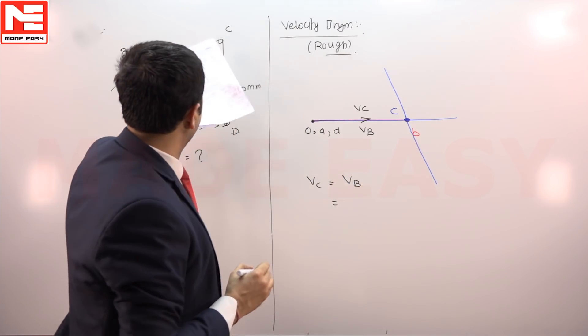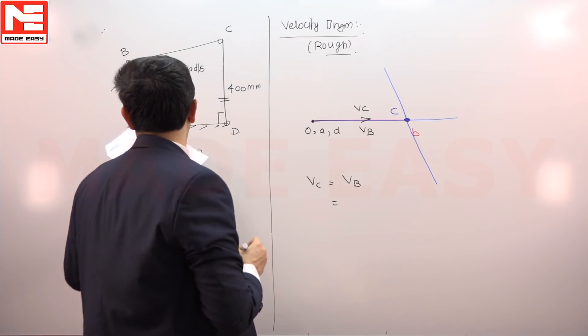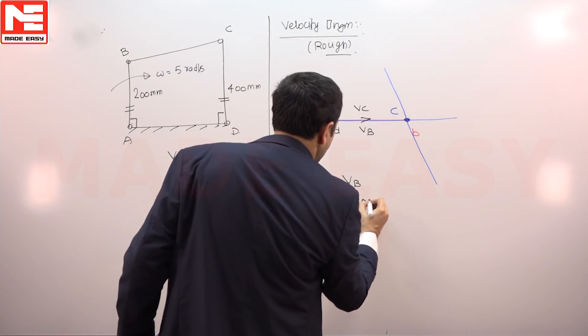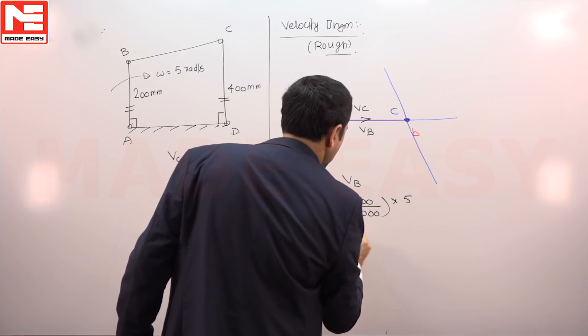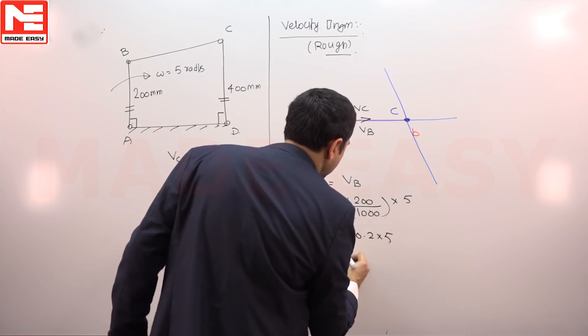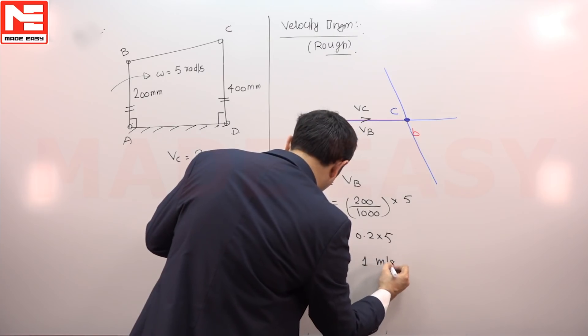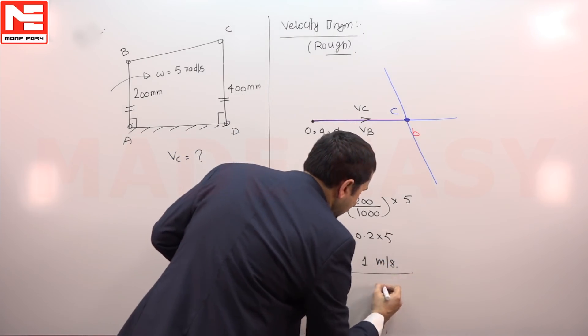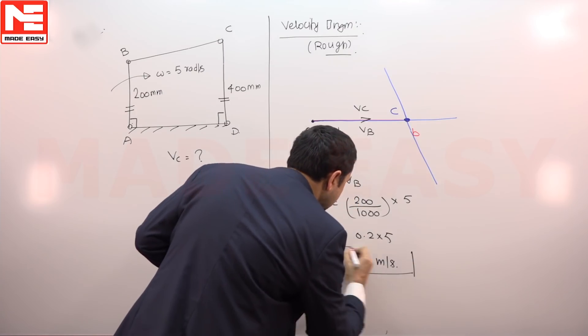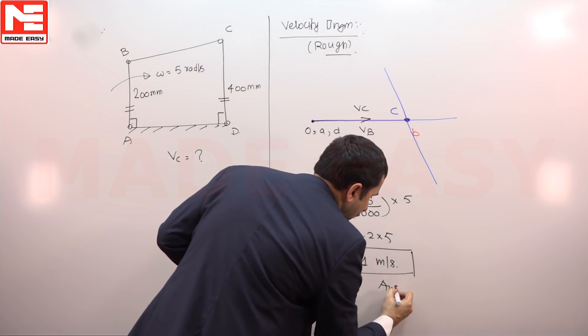VB is equal to VC. So B velocity we can calculate because its radius is given: 200 by 1000 meters into omega is 5. That is 0.2 into 5, that is 1 meter per second. So the right answer for this problem is 1 meter per second.